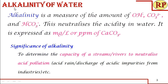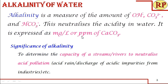We will understand what alkalinity of water is — it is a measure of the amount of hydroxide, carbonate, and bicarbonate ions present in it. Apart from these, silicates, phosphates, and borates also contribute to alkalinity but not in major quantities, so we generally restrict ourselves to these three ions. This neutralizes the acidity in water and is expressed as mg per liter or ppm in terms of calcium carbonate.